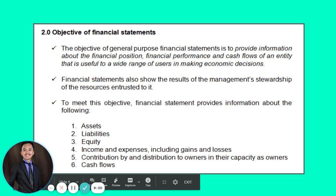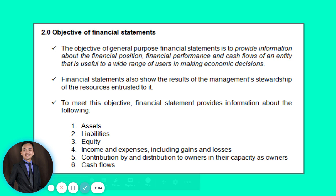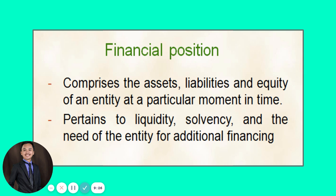To meet this objective, financial statements provide information about assets, liabilities, equity, income and expenses including gains and losses, contributions and distributions to owners, and cash flows. Financial position — comprising assets, liabilities, and equity — reports on the entity's liquidity, solvency, and need for additional financing. It also reports the ability of an entity to settle short-term obligations pertaining to liquidity.